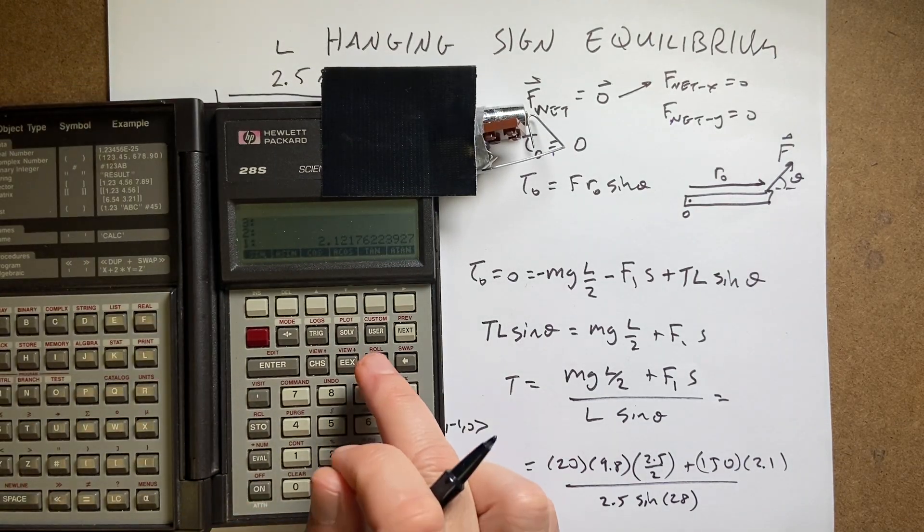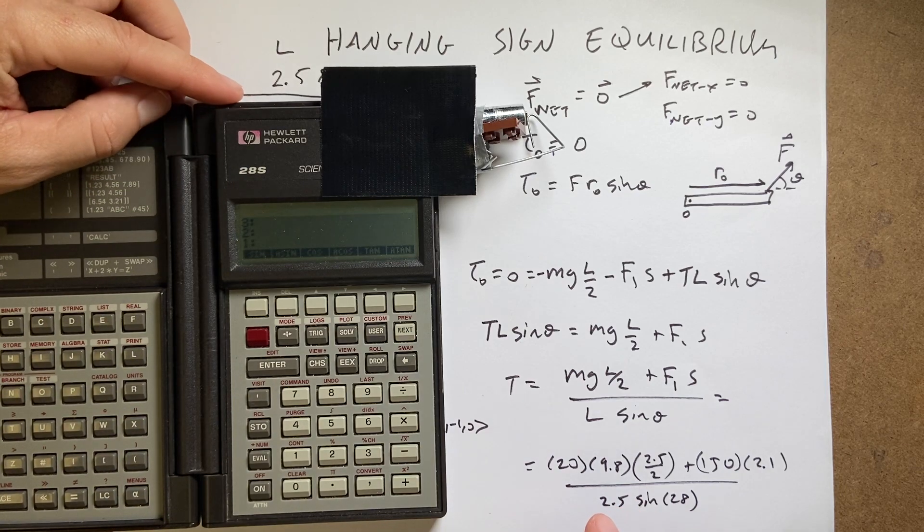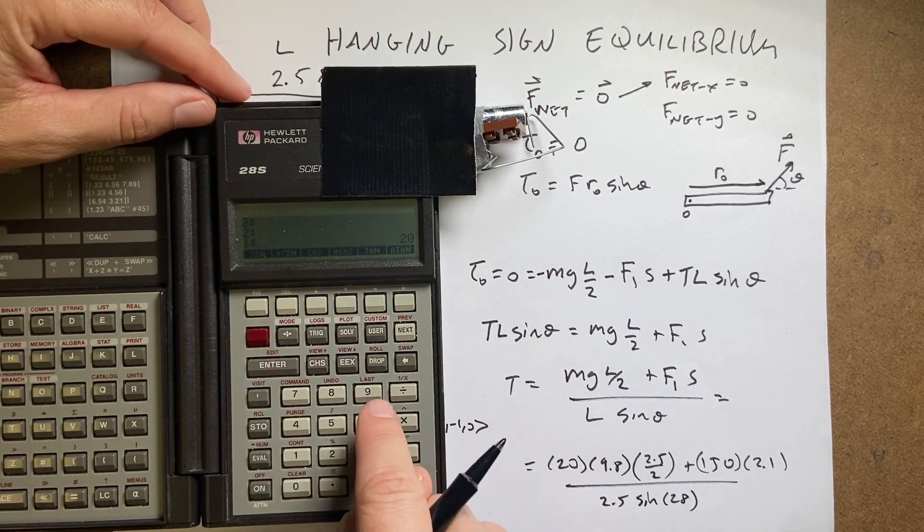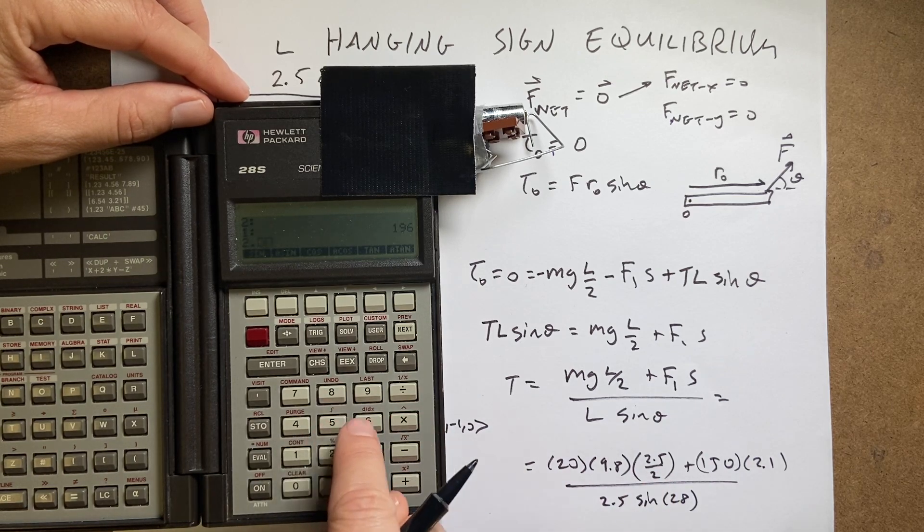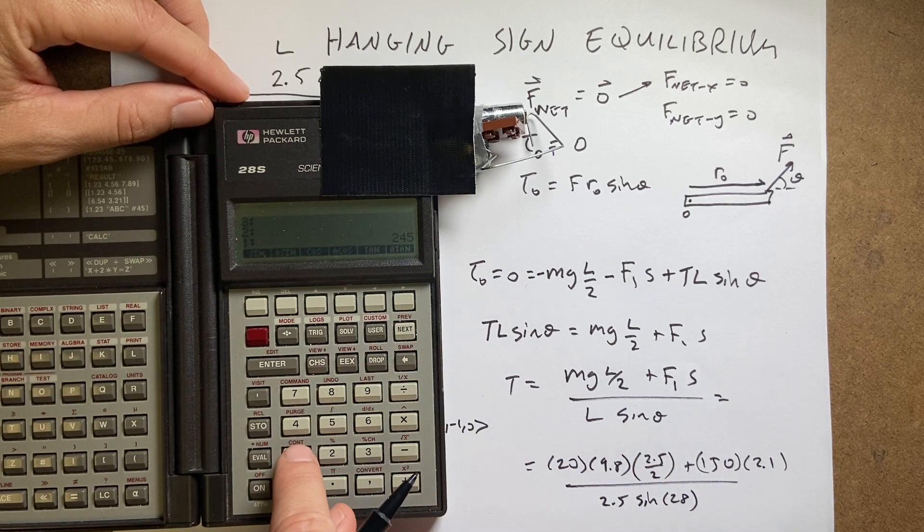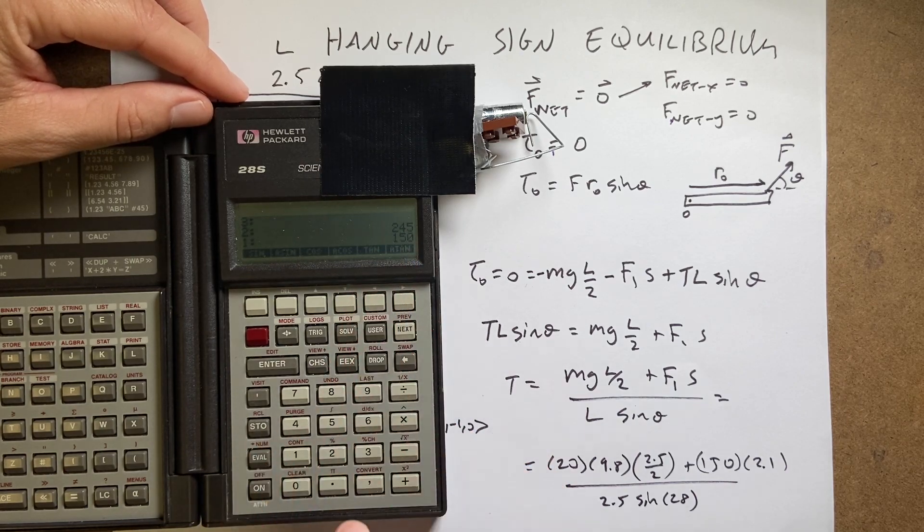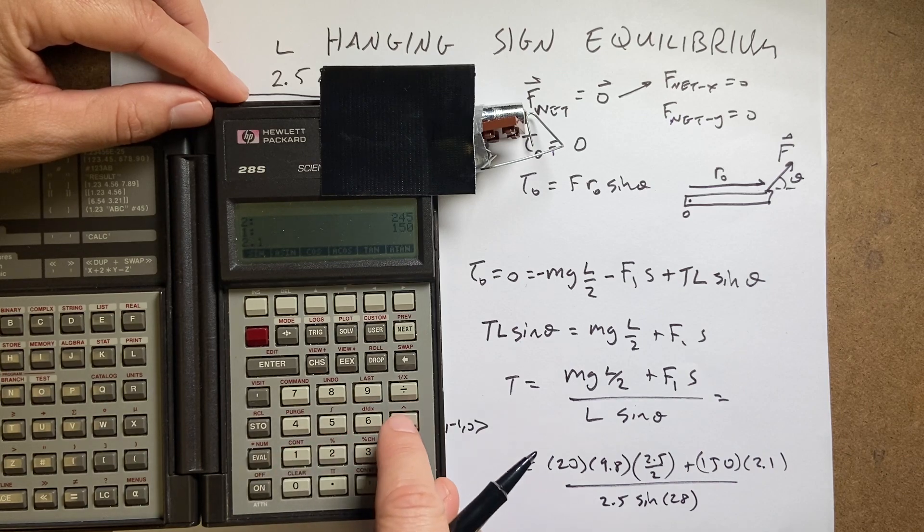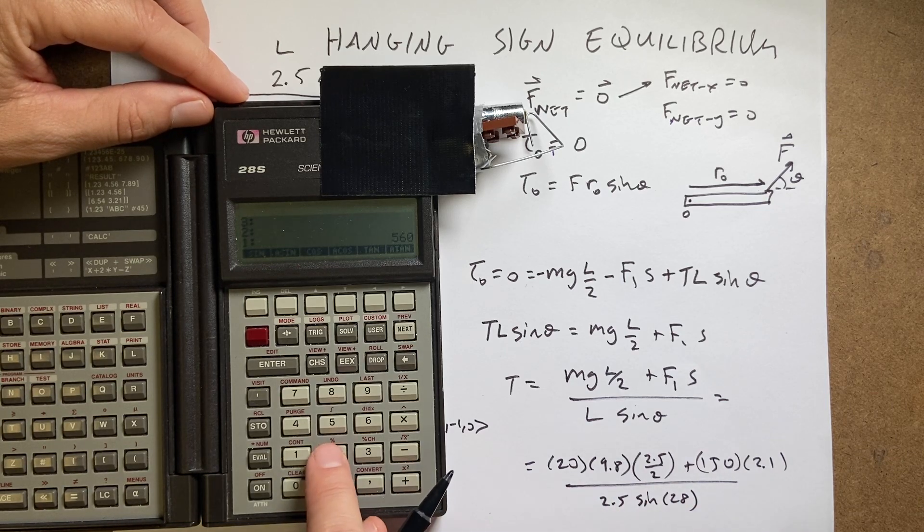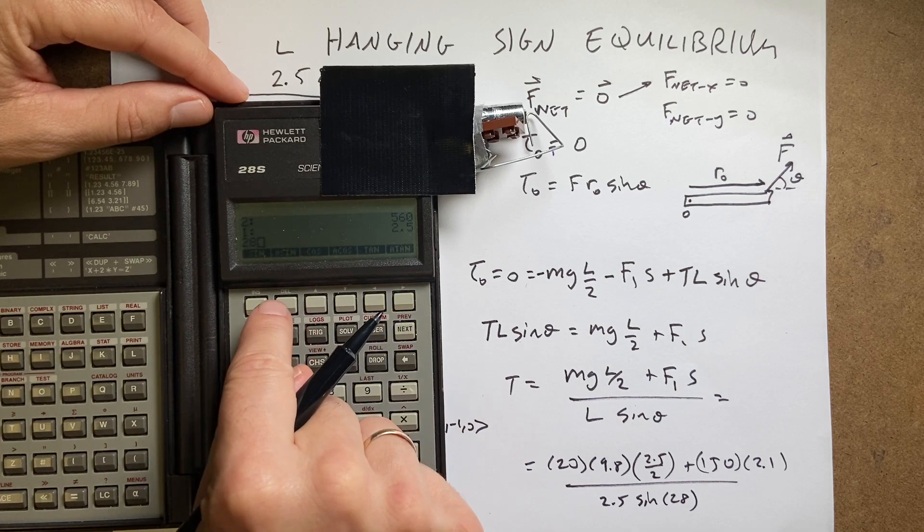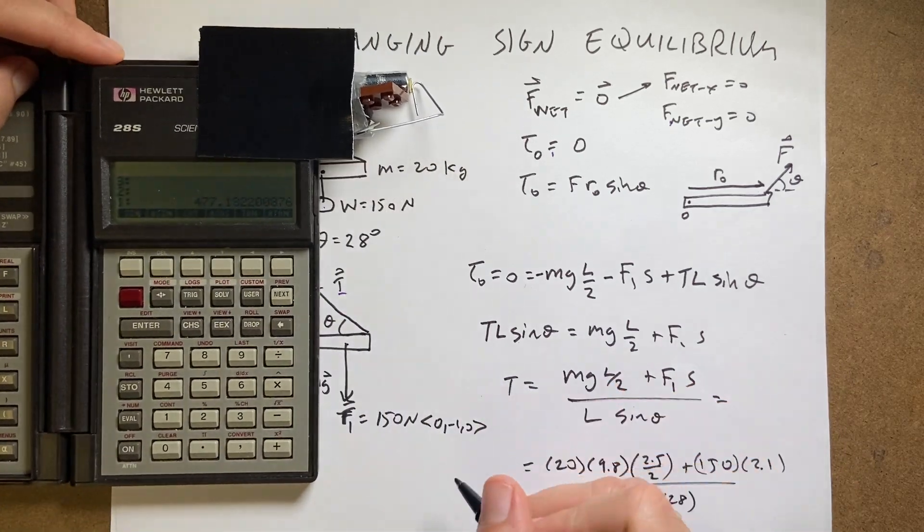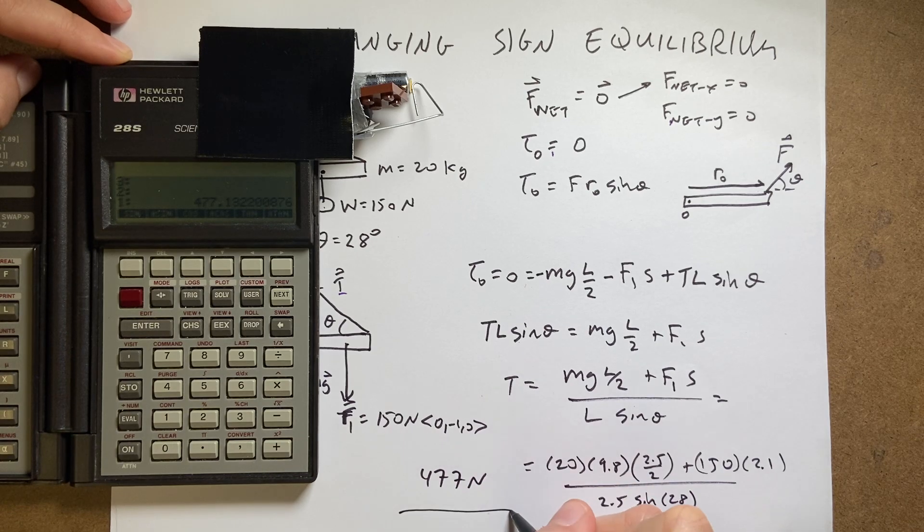Okay. Again, this is where having a RPN calculator is super useful. I'll step you through it. If you don't have one, you can get one of these on an app on your phone, or just get used to your own calculator. It's fine too. So I'm going to say 20 enter 9.8 times 2.5 times. I need to divide by 2, 2 divided by, okay. So that 245 is this whole thing. Now I'm going to do that 150 enter. You see, I didn't multiply those two yet. And then I'm going to, or add them now 2.1 times. Now I can add them plus. So now I have the whole thing on the top. Now I'm going to do this on the bottom. So 2.5 enter now 28 sine times. Now I can divide by and I get 477 newtons. And that's the answer.